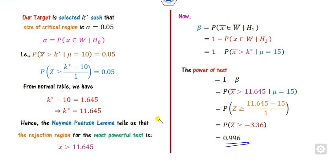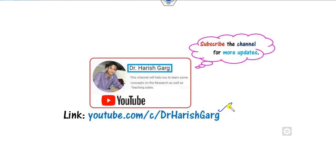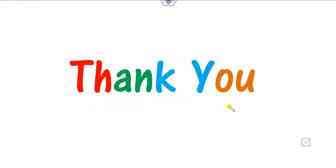This is how you solve Neyman-Pearson lemma problems. Remember, your target is to find the value of K so that it becomes the most powerful test. You can find other videos on minimum variance unbiased estimators, Rao-Blackwell theorem, type 1 error proof, and more — all available in the playlist on channel Dr. Rajkar. Best of luck students. Happy learning.